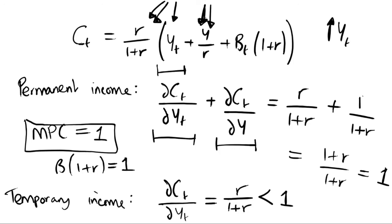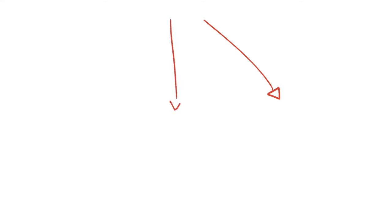To summarize: with a temporary income shock we have consumption smoothing, and with a permanent income shock the marginal propensity to consume equals 1. This all depends on the simplifying assumption that the discount rate multiplied by 1+r equals 1, which is a common assumption at the intermediate macroeconomics level. In the next video we'll be looking at Hall's random walk hypothesis — subscribe for future videos, and please drop a like if this was useful.